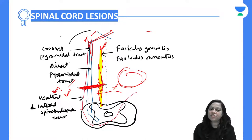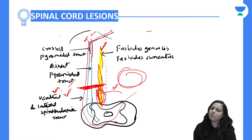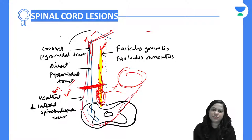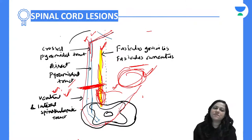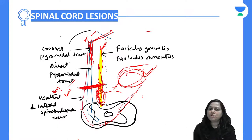Below the level of the lesion, on the same side, the dorsal column carrying fasciculus gracilis and fasciculus cuneatus senses — fine touch, proprioception, vibration — will be lost. On the opposite side, the crossed fibers of the ventral and lateral spinothalamic tract are damaged, so pain, temperature, and crude touch will be lost on the opposite side. The pyramidal tract fibers are damaged on the same side, so there will be upper motor neuron type of paralysis on the same side. On the opposite side there is little or no motor damage.